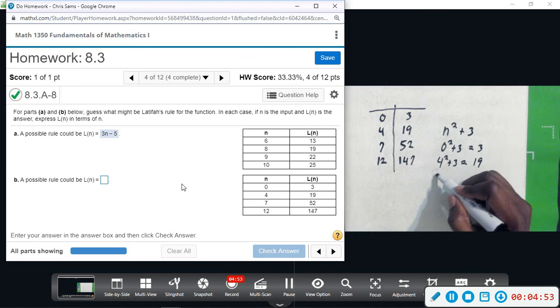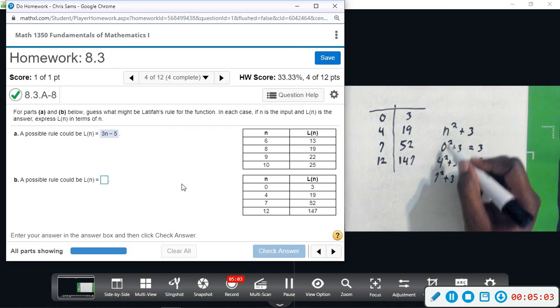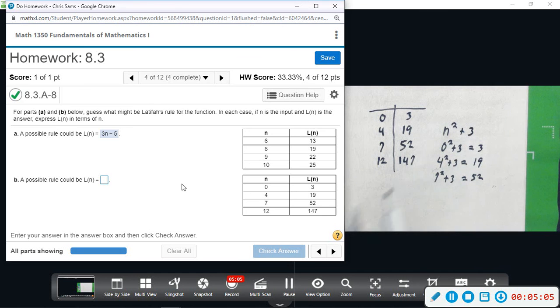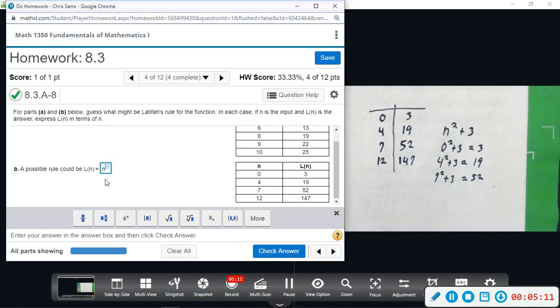All right, if I did seven squared plus three, that gives me forty-nine plus three would definitely give me fifty-two. Okay, so it is being squared, adding three looks like that's working. So we're going to try that: n squared plus three.